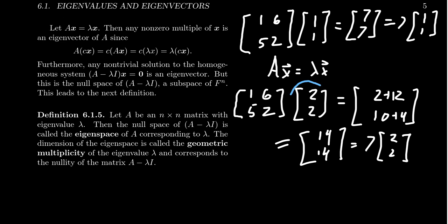You'll notice that the same vector showed up twice. We take A times the vector [2,2], we end up with 7 times the vector [2,2]. The relationship here is that the vector [2,2] is just 2 times the original eigenvector we have, which is [1,1]. So taking a scalar multiple of an eigenvector gives us another eigenvector.